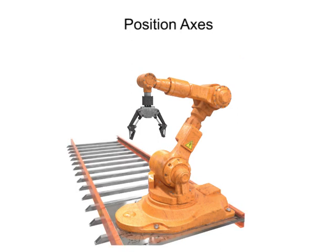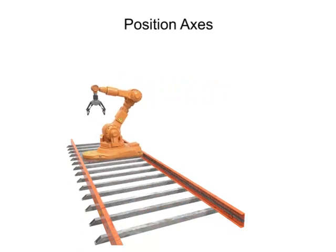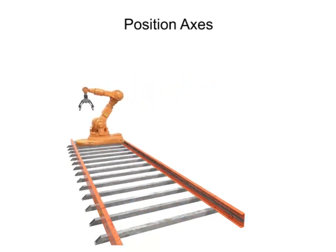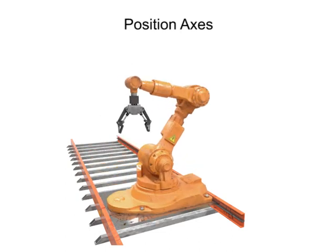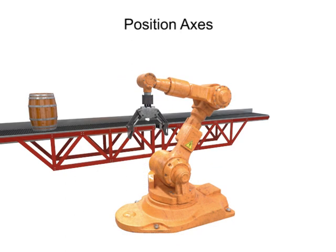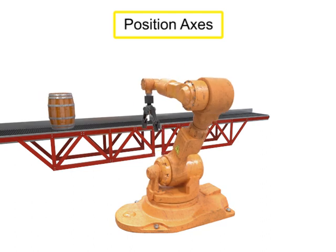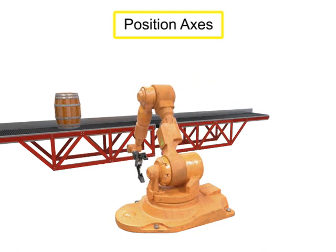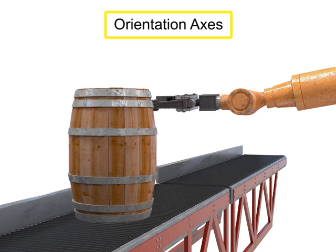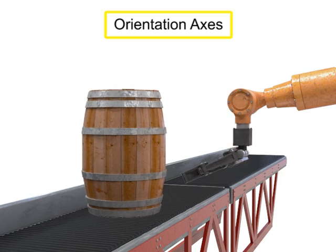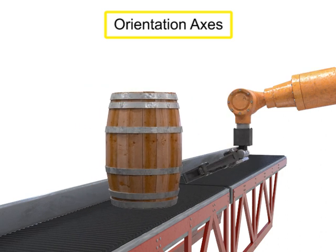If the robot were to slide along a track, it would have a fourth position axis of linear movement and another degree of freedom. While the position axes locate the tool in the work area, the orientation axes help orient the tool in relation to the work piece.